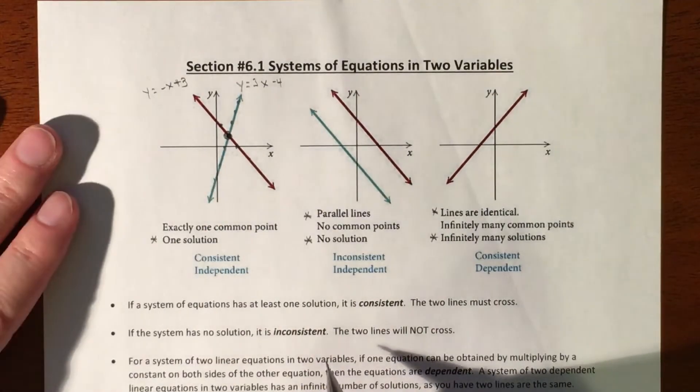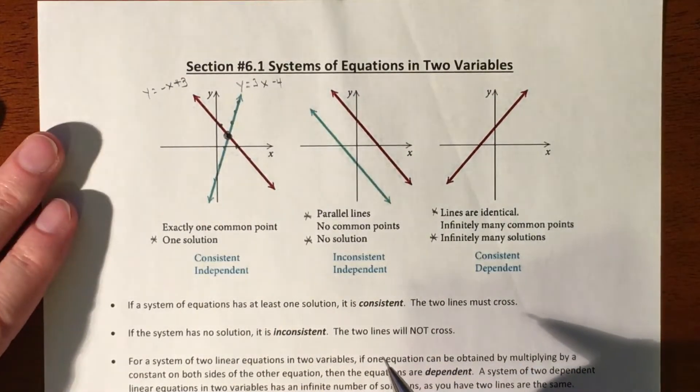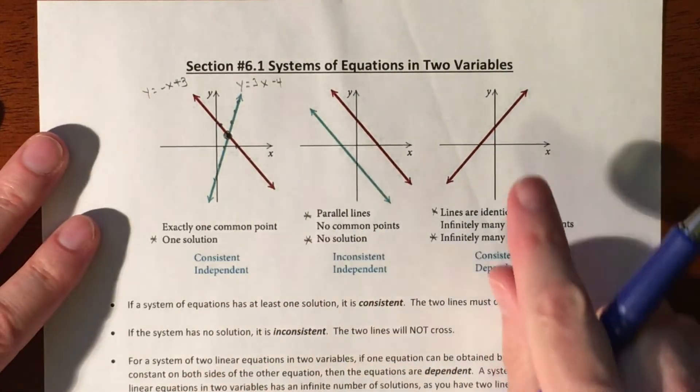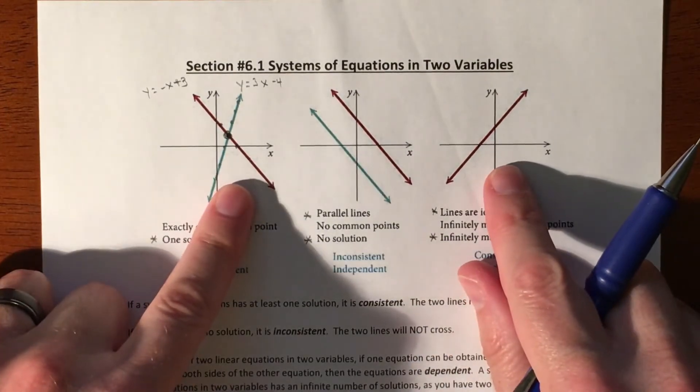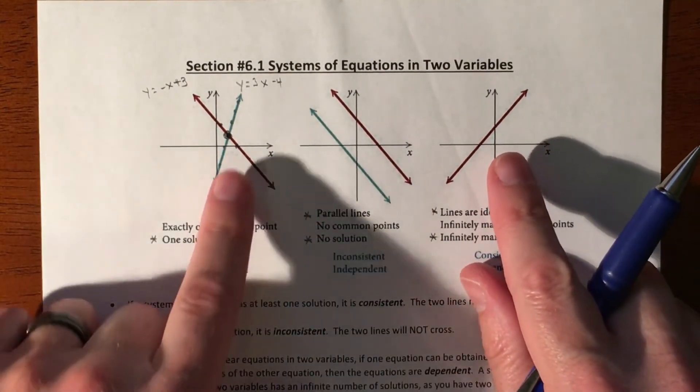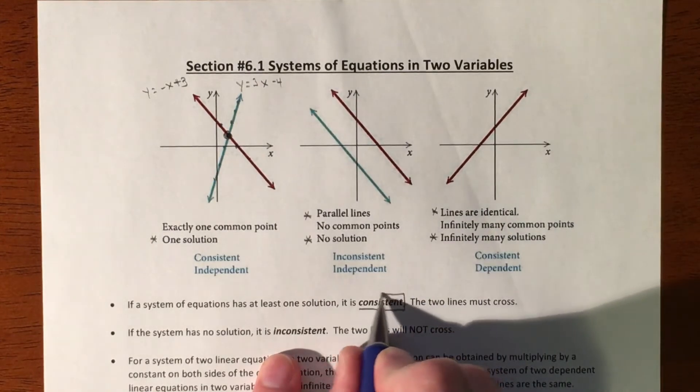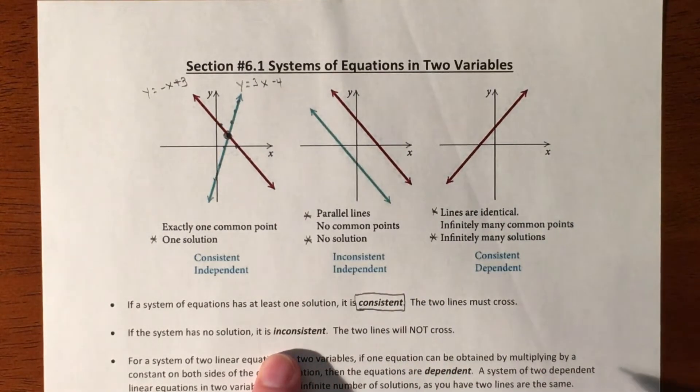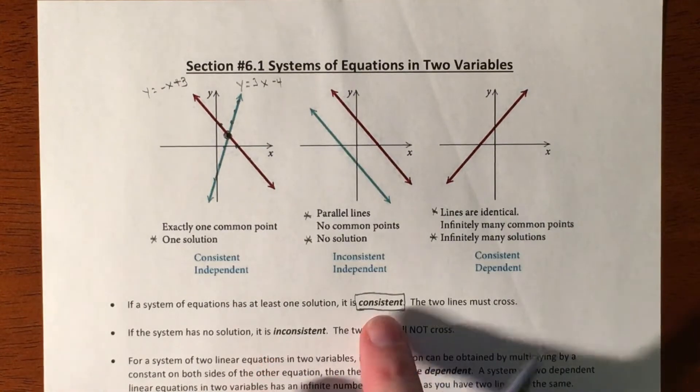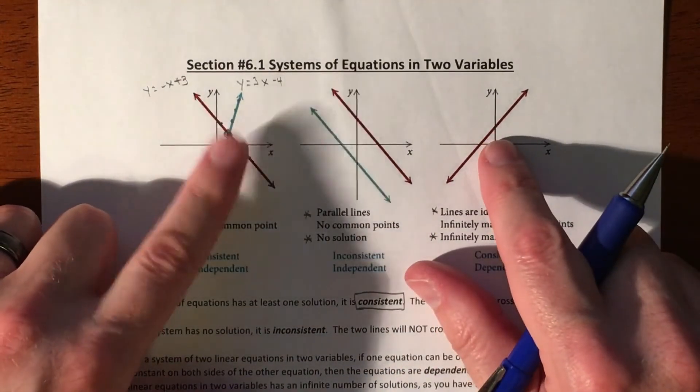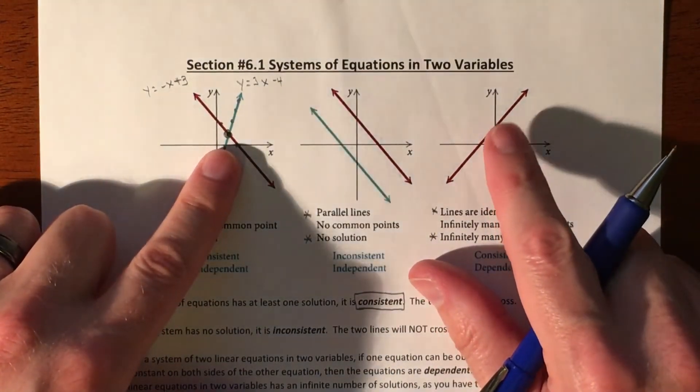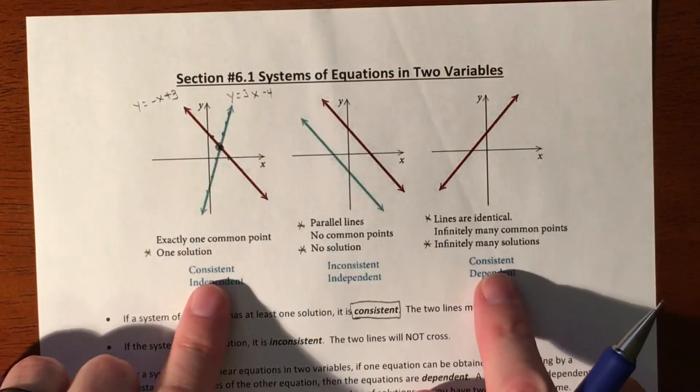There's also some fancy language that goes with this. Anytime you have a solution to it, it's known as consistent. So your equations are consistent. But then there's two different kinds of consistent, because this is one solution and this is infinite solutions. The fact that they have a solution makes them consistent.